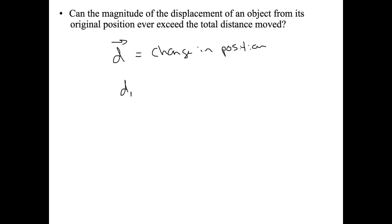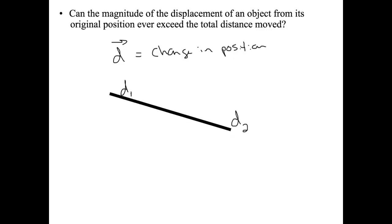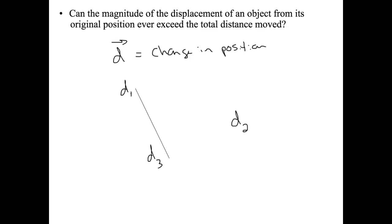If d1 is here and d2 is there, then our displacement is going to be a straight line from there to there. However, if d2 is there and d3 is over there, our displacement is simply d1 to d3 and does not take into account d2 at all.